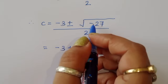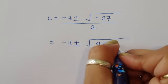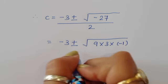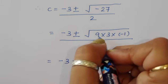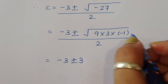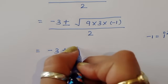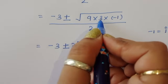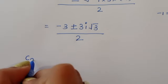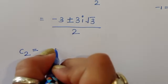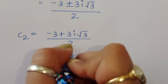Simplifying √(minus 27): we write minus 27 as 9 times 3 times minus 1. So √(minus 27) equals √9 · √3 · √(minus 1) equals 3√3 · i, since √(minus 1) equals i. Therefore c₂ equals (minus 3 plus 3i√3) / 2 and c₃ equals (minus 3 minus 3i√3) / 2.